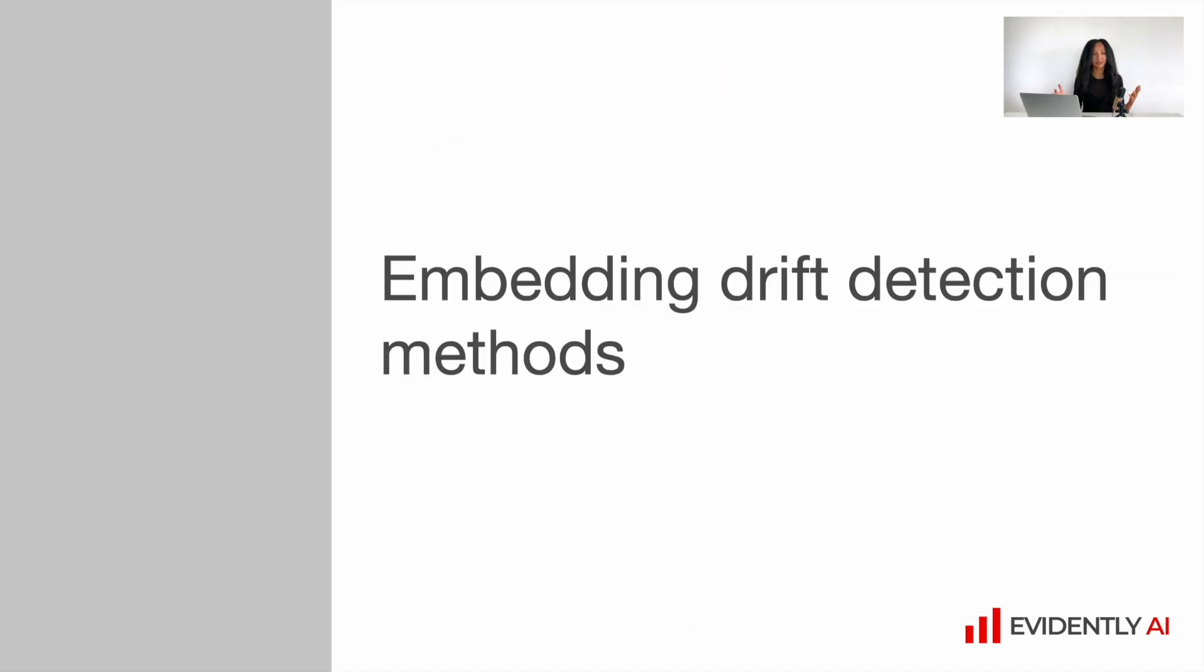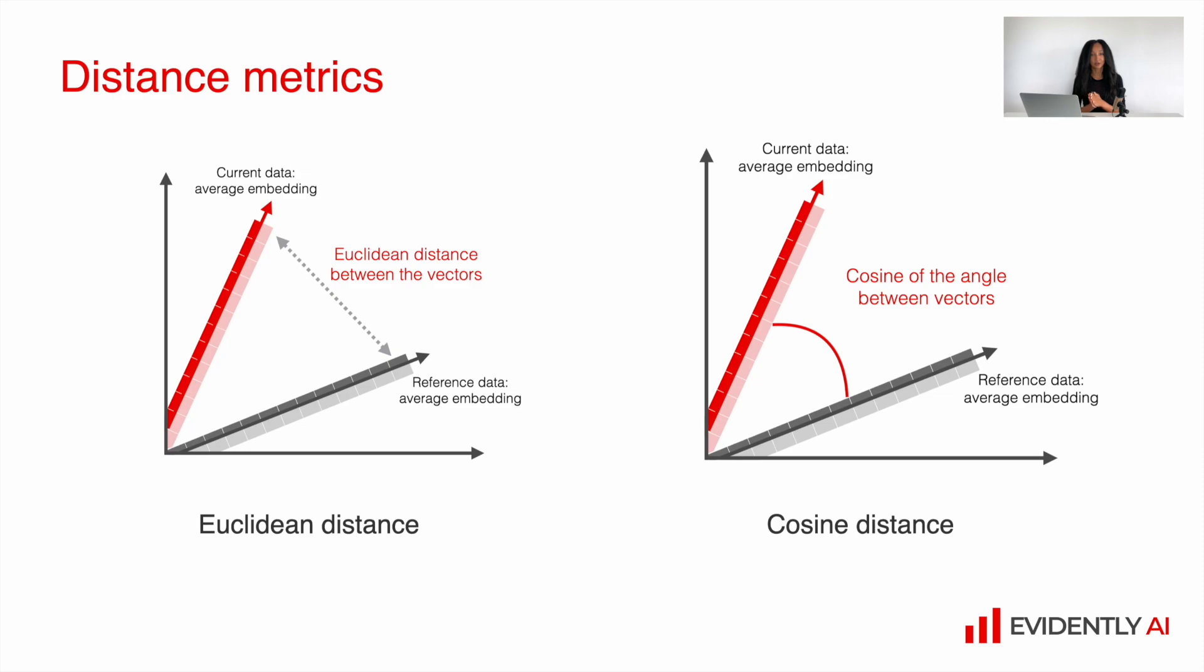So embedding drift detection methods. Let me start from distance metrics. Each object which we have in our dataset in the format of embeddings is a numerical vector. We can calculate the distance between vectors and those distances can be really different. It can be Euclidean distance between vectors or cosine similarity to assess the angle between vectors. And if we use those metrics, we can detect the difference between our reference and the current data.